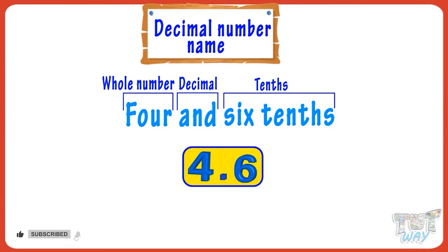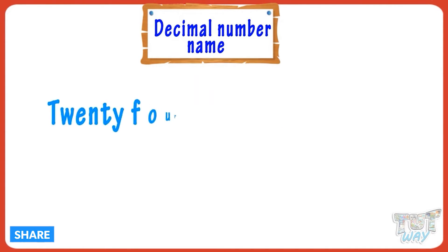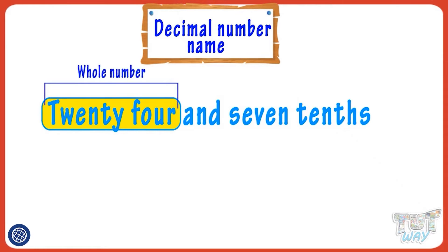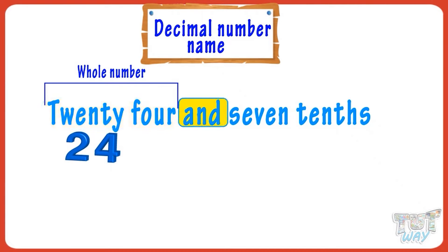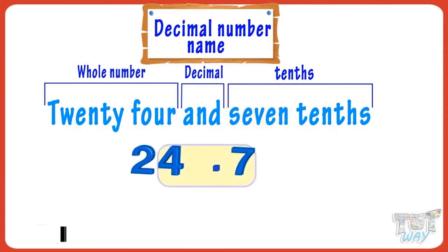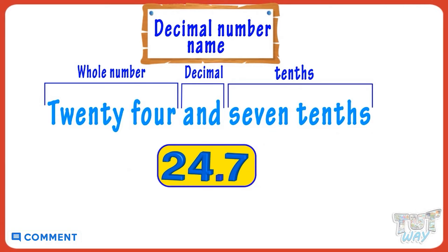Now let's take another example: twenty-four and seven tenths. We have to convert it to its standard form. The number before 'and' is a whole number — just write it as it is, so write twenty-four. We know 'and' means decimal point, so put a decimal. Seven tenths means seven is the first digit after the decimal point. So our number became twenty-four point seven.